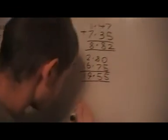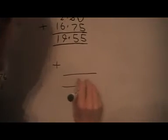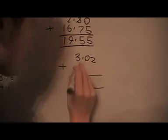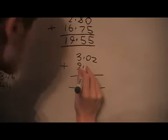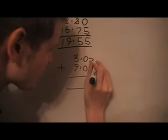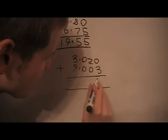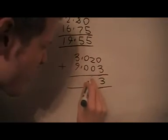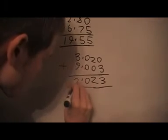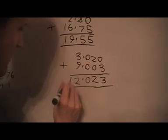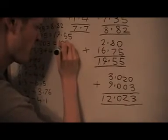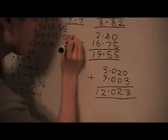Next one. 3.02 plus 9.003. You can also put an extra zero on here if you like, but you don't need it. So we'll get 3, 2, 0, and we'll get 2, and then we'll carry the 1 like usual. So we'll get 12.023.